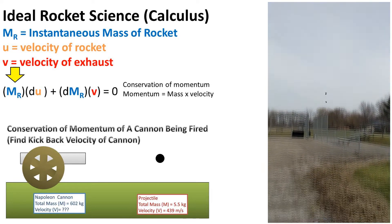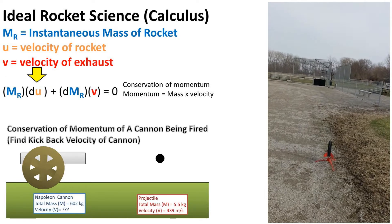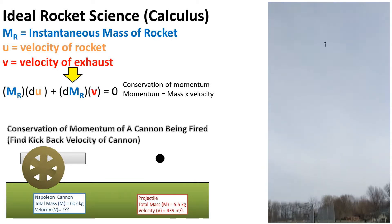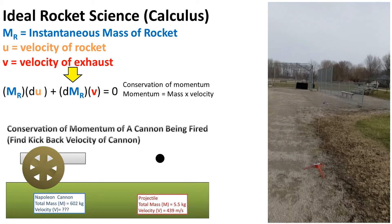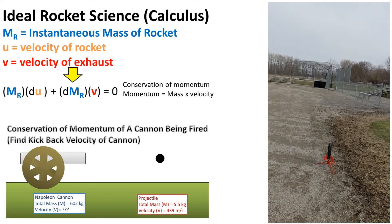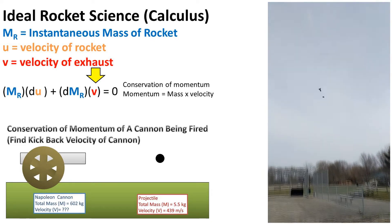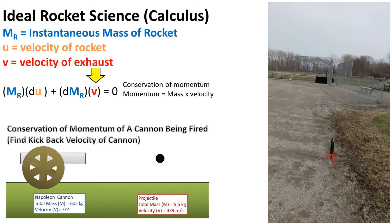So we get that the instantaneous mass of the rocket times the delta or change in velocity of the rocket plus the delta or change in mass of the rocket—basically, the change in mass of the rocket is the amount of mass leaving the rocket in the form of exhaust—times the velocity of the exhaust must all equal zero.